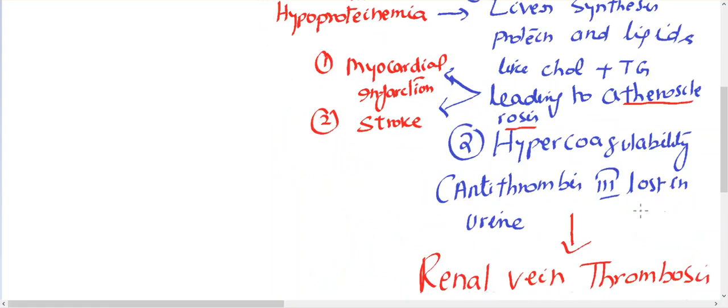The second complication which can occur in nephrotic syndrome is renal vein thrombosis. Now why do patients with nephrotic syndrome have renal vein thrombosis? The reason is that they lose antithrombin 3 in the urine. Why do they lose antithrombin? Because as we saw, there's glomerular damage. They lose antithrombin, so the body is in a more hypercoagulable state.